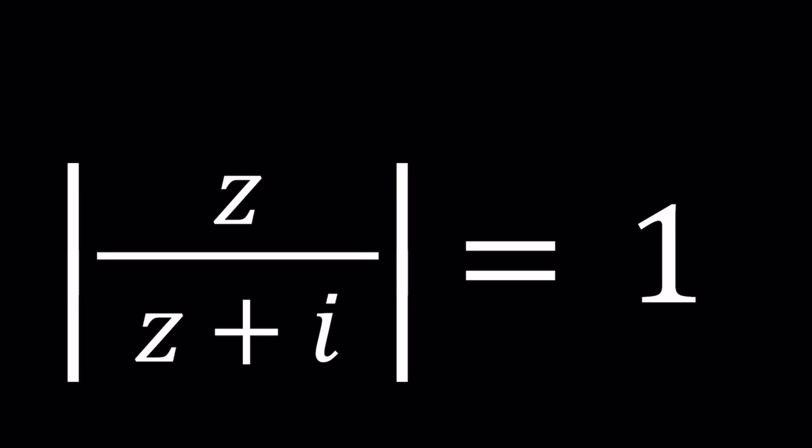Hello everyone. Welcome to A plus B I. This channel is all about complex numbers and in this video we're going to be solving a problem with absolute values. We have the absolute value of z over z plus i, and we're going to find the set of z values such that this equation equals 1.